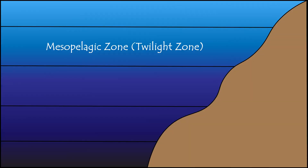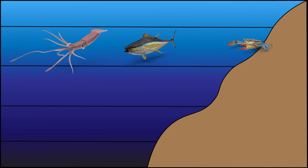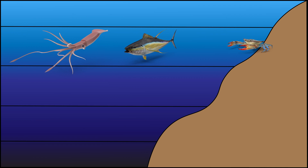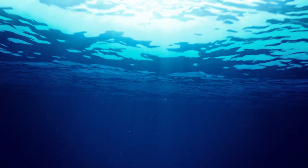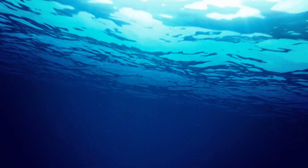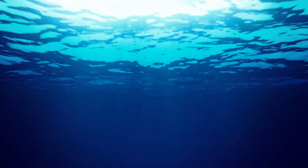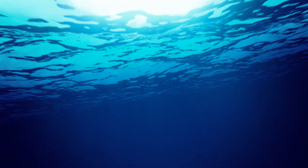The second layer of the ocean is called the mesopelagic zone, or the twilight zone. Below the epipelagic zone, the mesopelagic zone extends from around 200 meters to 1,000 meters, or 656 to 3,280 feet deep. Sunlight here is limited and the ocean becomes progressively darker. Some light penetrates, but it's not enough for photosynthesis — the process by which green plants make their own food.